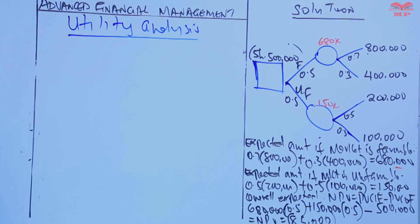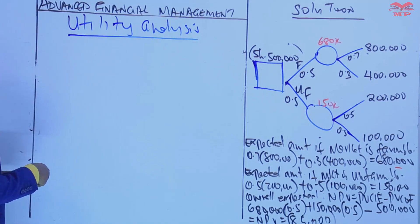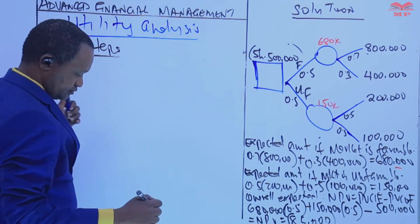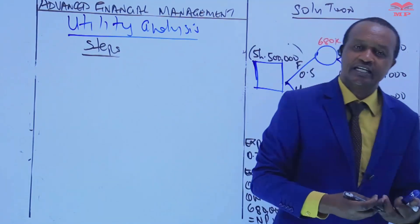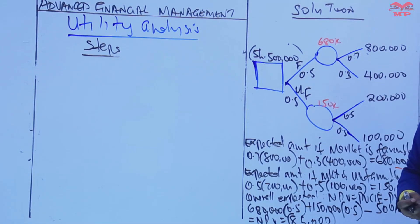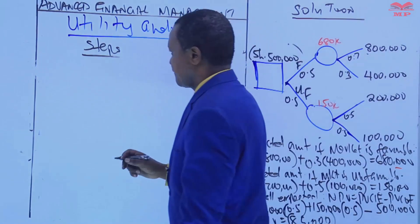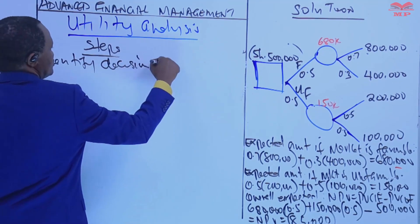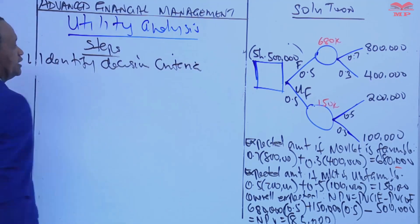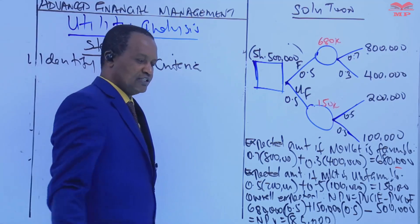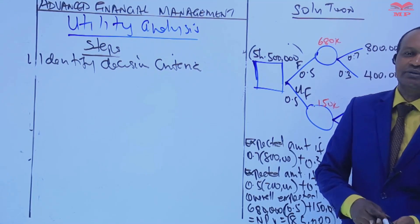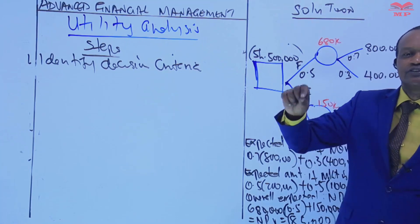What are the components — or let me say steps — of utility analysis? How is it done? The first step is to identify decision criteria. The first thing to do is to determine the relevant factors or criteria that are important for making the decision.